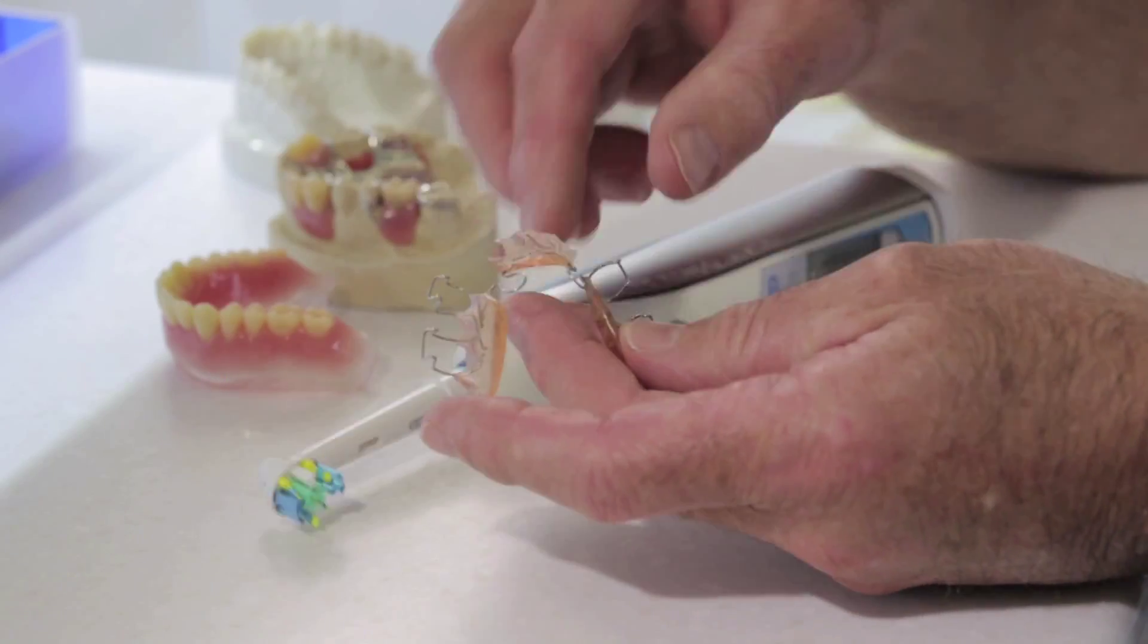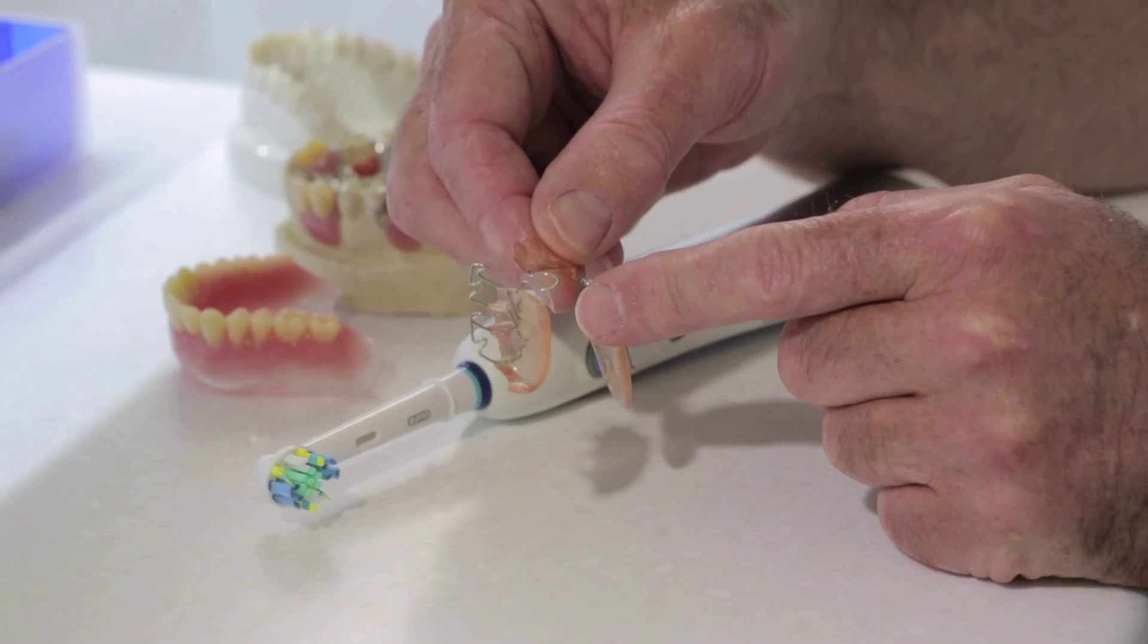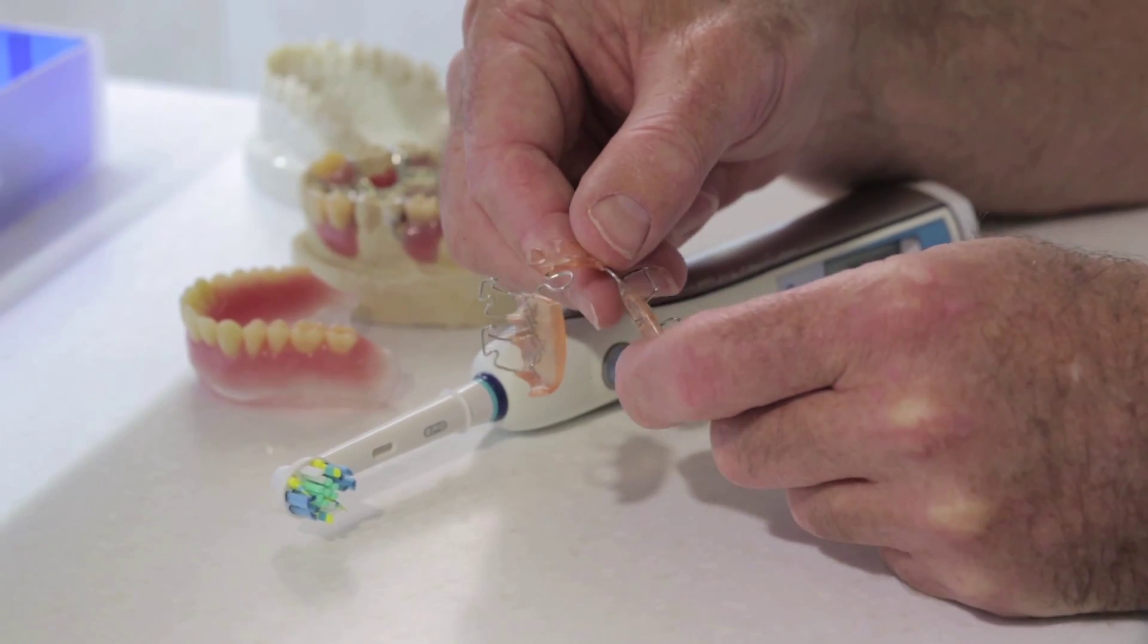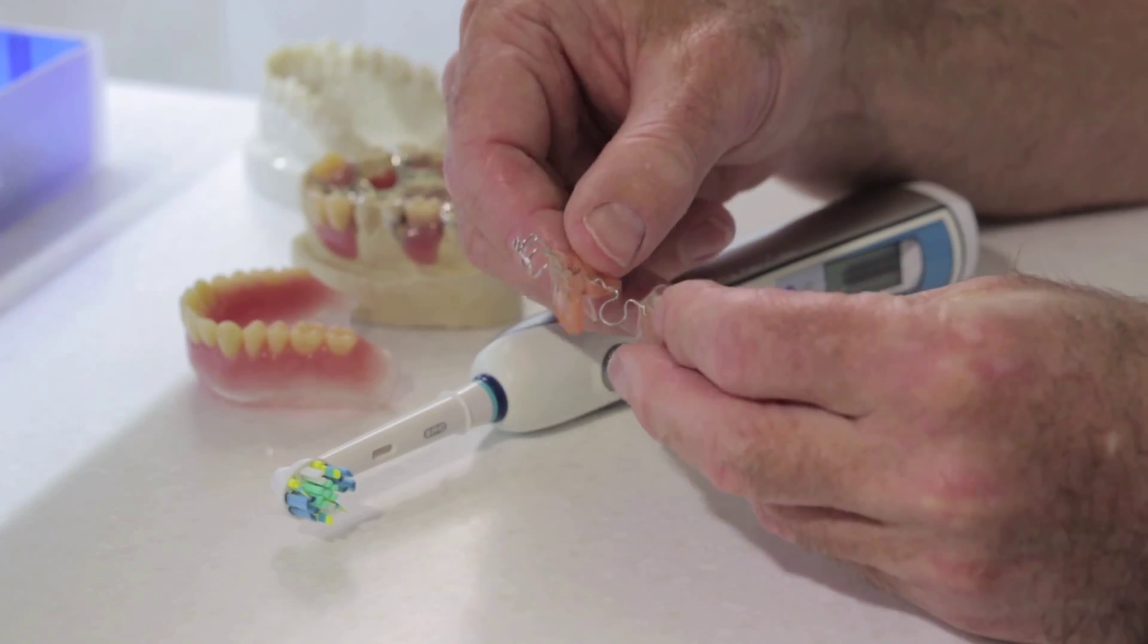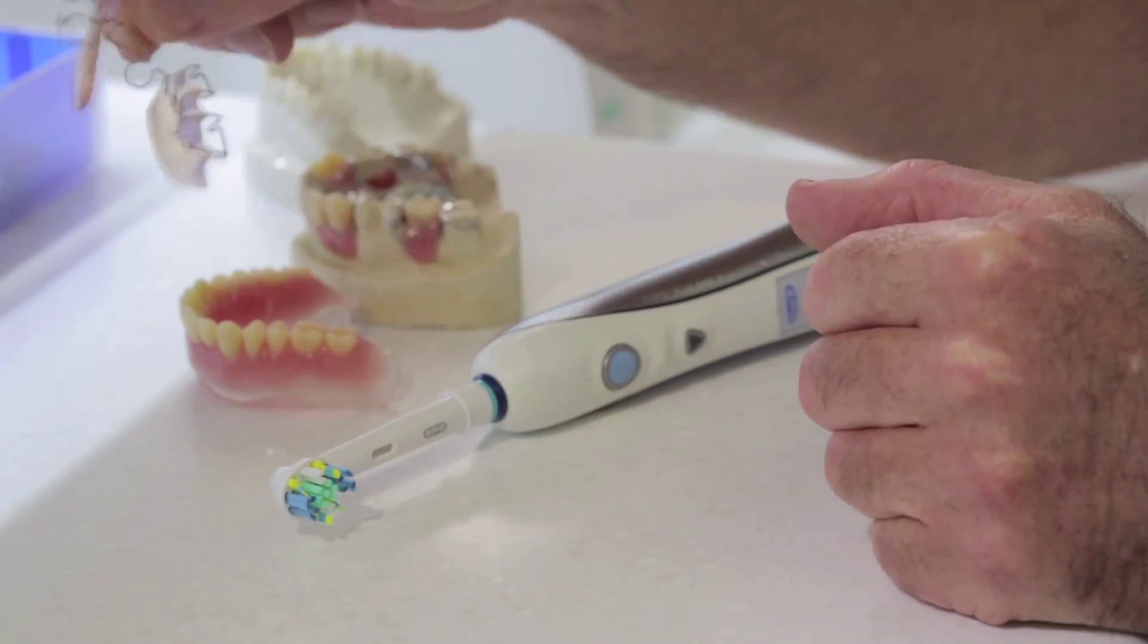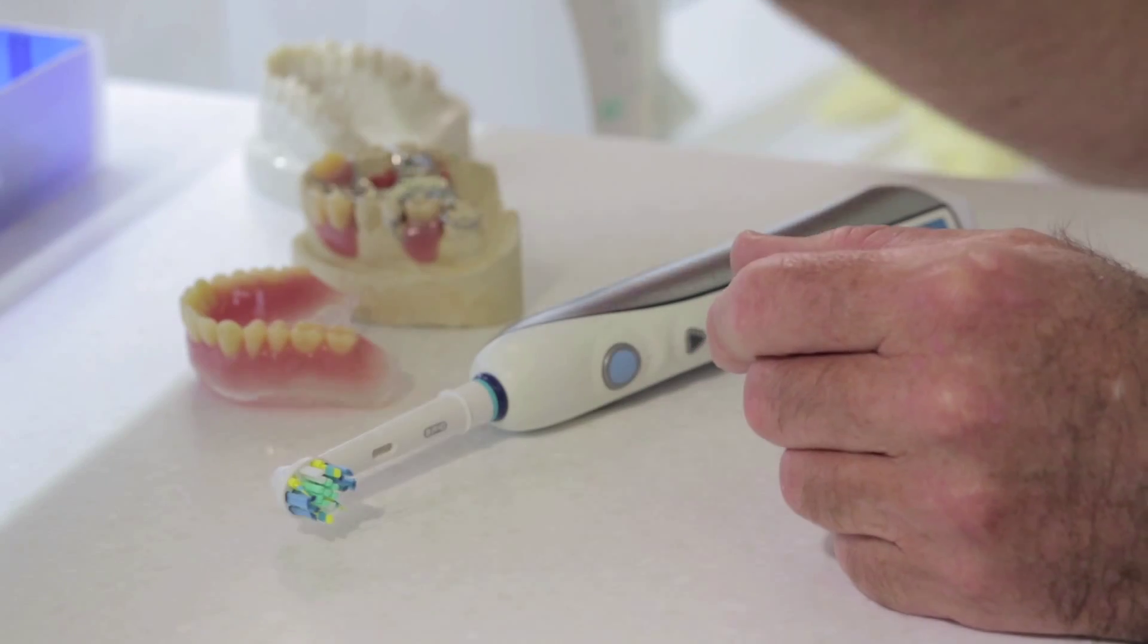It's important that the brace looks as sparkly and as clean as it was when it was first given to you. You shouldn't see white deposits of plaque on it, and it should be nice and clean, rinsed off, and then reworn.